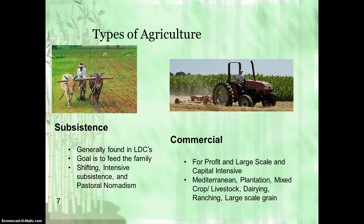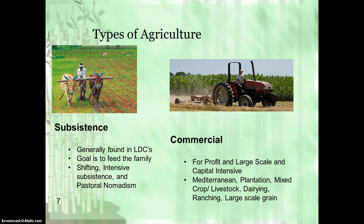On the left we see subsistence agriculture, and it's generally found in less developed countries. The goal of subsistence is to primarily feed yourself, primarily to feed your family. You may have a little bit of overflow and you may be able to sell that for profit, but that's not the main goal — it's just to make enough so that you can survive. The categories under subsistence are shifting cultivation, intensive subsistence, and then pastoral nomadism. Here in the picture we see a farmer working by himself on the field, using animals, and so not that capital intensive.